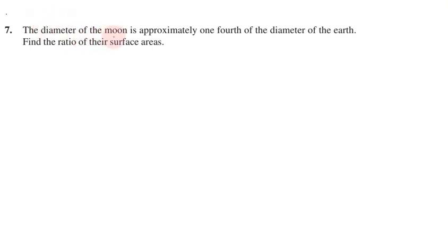The diameter of the moon is approximately one-fourth of the diameter of earth. Find the ratio of their surface areas. So the diameter of the moon is approximately one-fourth of the diameter of earth, and diameter of the moon is approximately equal to one-fourth, meaning one by four, of the diameter of earth.